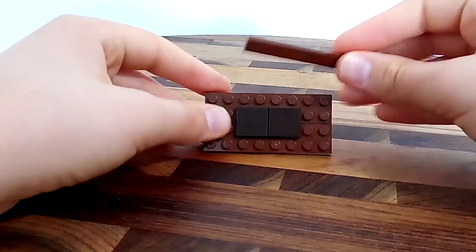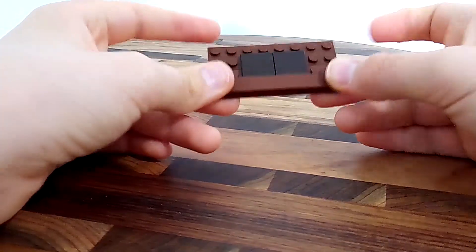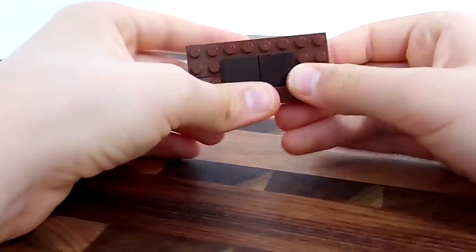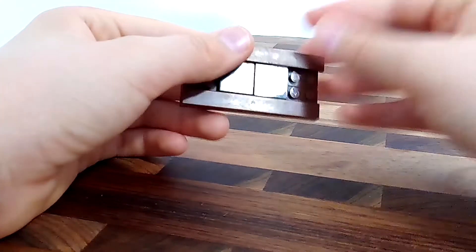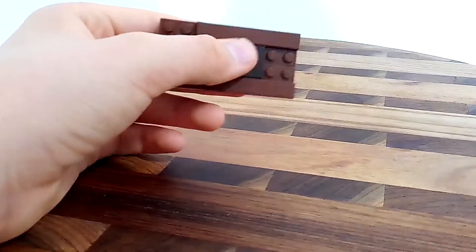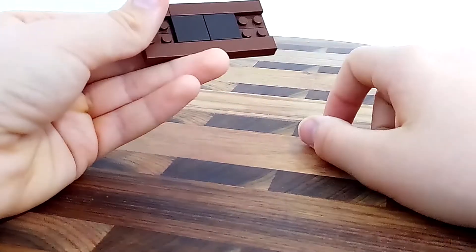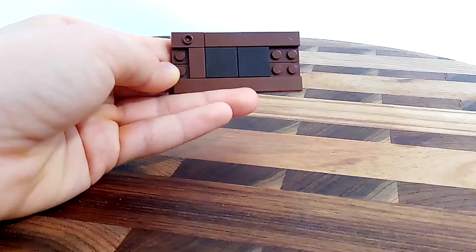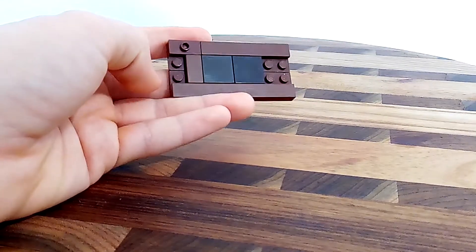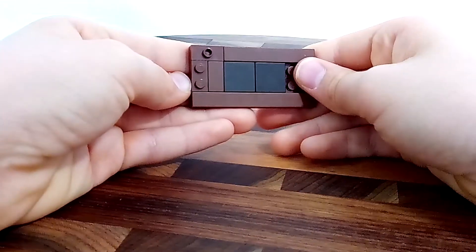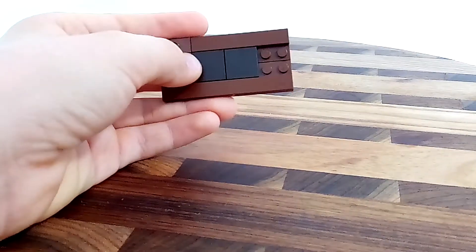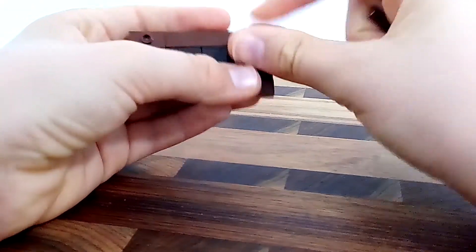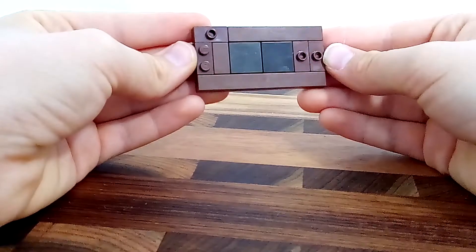Now on this side you are going to put a 1x8 brown plate. And then on this side you're going to put a six long and a jumper plate. Now you're going to do a 1x2 plate and a 1x2 tile. Sorry, all of these are tiles. And then on this side you're going to do these two. Ta-da! That is what it should look like, I think.